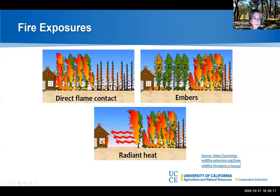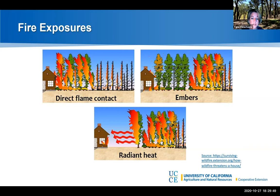Direct flame contact, embers, and the next piece: radiant heat. Radiant heat is when you have an ignition of maybe your neighbor's building or your own attached garage, and the heat from that ignition creates enough heat to break a glass window, and then you get fire inside the house. It's kind of like putting your boots by the wood stove — you can actually create ignition. So being aware of these three types of exposures is what we're going to talk a lot about.